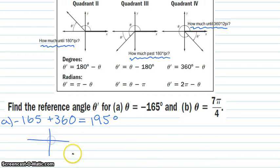That is going to be easier to work with. So if I just do a little sketch, I know 195, since this is 180, that's going to be 195. So since this is 180, how much past 180 have we gone? And that's going to be 15 degrees. So our reference angle is 15 degrees for negative 165.